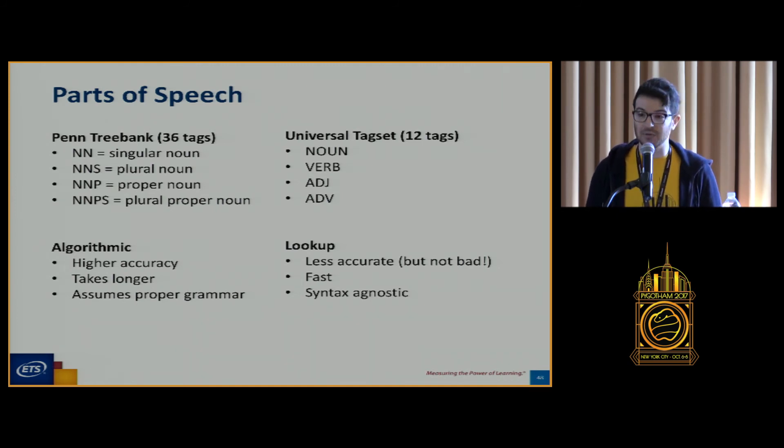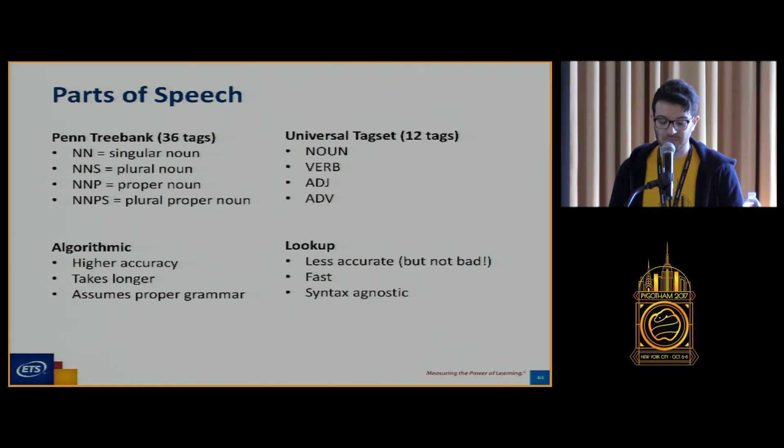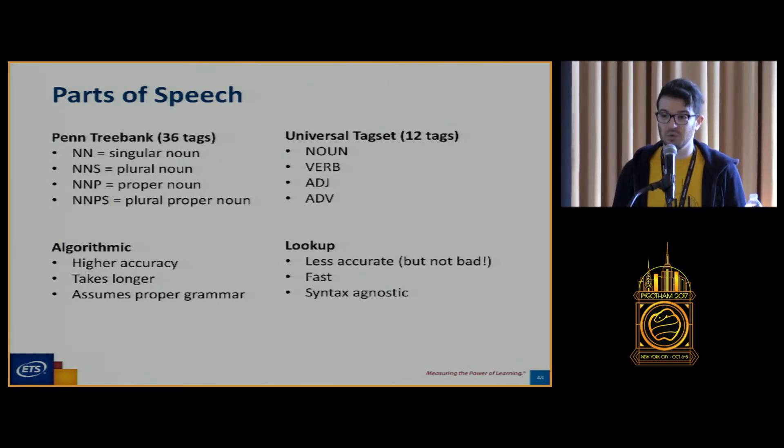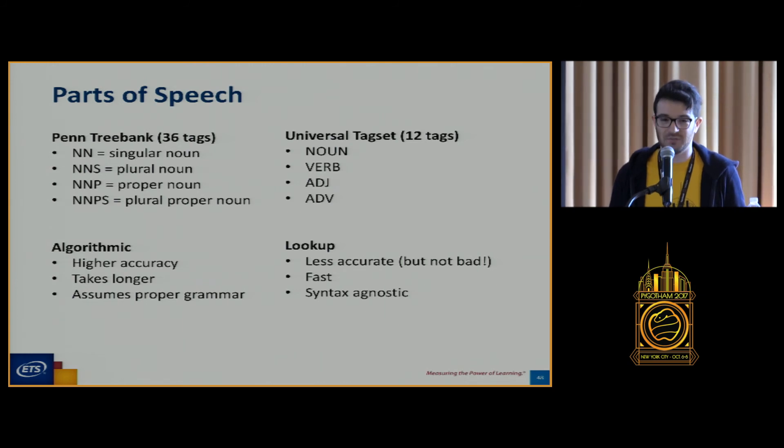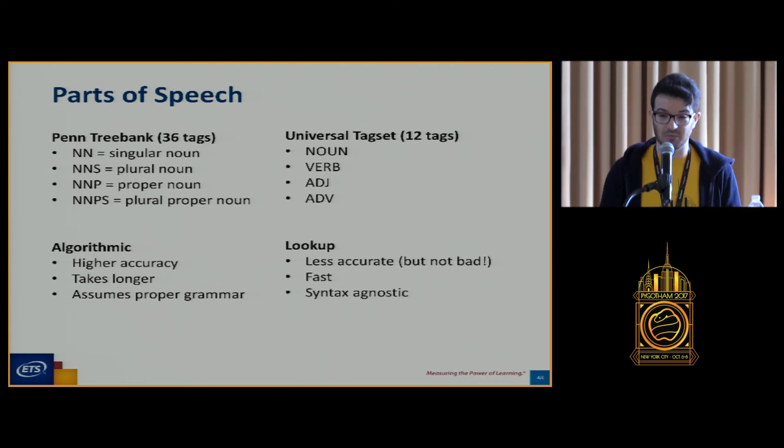We have options for how we do this. If we want to be extremely accurate, we're going to have to go with an algorithmic version. Stanford, for example, has a very accurate part of speech tagger, but it also takes longer and requires proper grammar, which if we're just entering a phrase here, we're not going to have. It's trained on things like the Wall Street Journal, which is not how most people write. So it's very accurate if you're trying to get the part of speech of words in a Wall Street Journal article, but if you're trying to get Twitter data, it's not going to work very well. We can also just look up a word in a dictionary. Words have multiple parts of speech, but just getting the most common one for each word, which is what we're going to do here, still works pretty well.